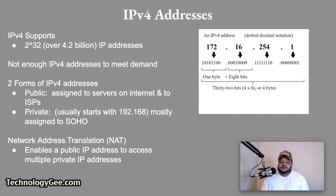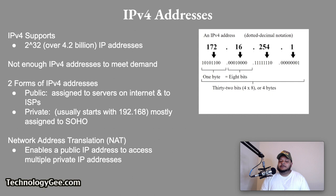IPv4 supports up to 2 to the 32, or 4.2 billion IP addresses. Due to the massive number of network devices in the world, there simply are not enough IPv4 addresses to meet demand. IPv4 addresses are available in two forms: public and private. Public IP addresses are assigned to servers on the Internet and to ISPs. Private IP addresses usually start with 192.168 and are assigned to networks that connect to the Internet using a router. A feature known as Network Address Translation, or NAT, is included in routers and enables a public IP address to provide access to multiple private addresses on a network.